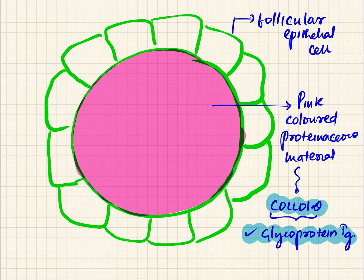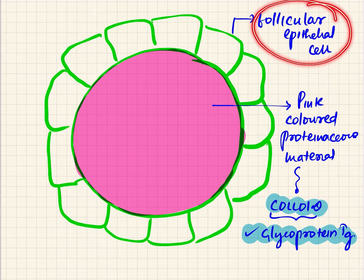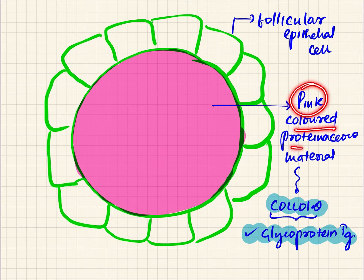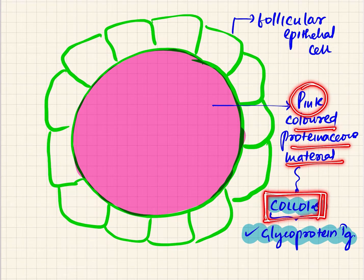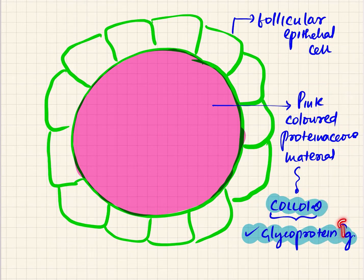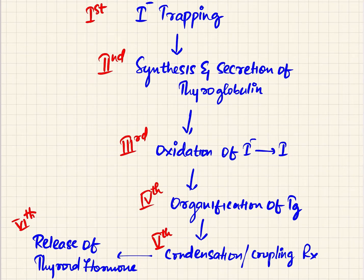To summarize the anatomy: the lobes of the thyroid gland contain many lobules; each lobule or acinus is lined by the follicular epithelium and filled inside with a pink-colored proteinaceous material called the colloid; and this colloid contains the glycoprotein called thyroglobulin, represented as TG. Now let us move into the biosynthesis of the thyroid hormones.